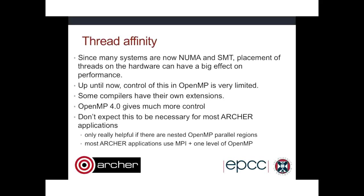Next topic is thread affinity. Many modern systems are complex within a node — we have NUMA nodes consisting of multiple sockets, and simultaneous multi-threading with hardware threads (what Intel calls hyper-threads). Placement of OpenMP threads on the hardware can have a significant effect on performance. Up until OpenMP 4.0, there was fairly limited control over this and some compilers had their own extensions. OpenMP 4 now gives you much more control, though for Archer users this is mainly relevant with nested OpenMP parallel regions.